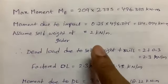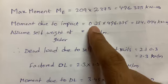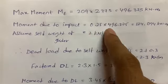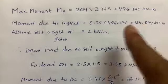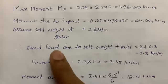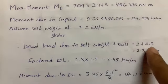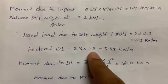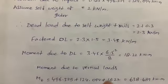Moment due to impact is assumed as 25% of the maximum moment: 0.25 × 496.375. For dead load, self-weight is assumed as 2 kN/m, plus rail weight of 0.3 kN/m (given), totaling 2.3 kN/m. Applying a load factor of 1.5 gives a factored dead load of 2.3 × 1.5 = 3.45 kN/m.